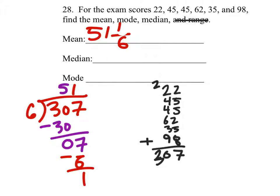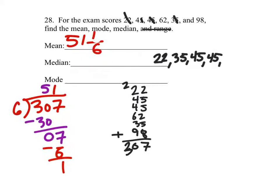The median, we're going to need this in order. So the lowest number we have is 22. Next lowest is 35. And the next lowest is 45, but it happens twice. Then 62. Then 98.